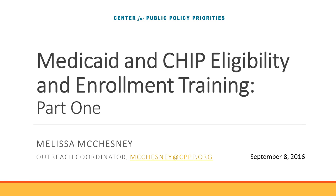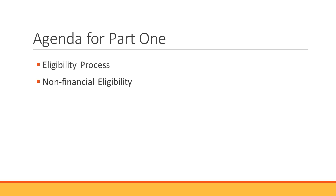I'm going to show you what our agenda for part one is today. Part one of the eligibility and enrollment series will focus on the eligibility process — what happens when you submit an application and how that application process links with the marketplace application. Section two is on what I'm calling non-financial eligibility. We'll discuss briefly the income limits for each of the Medicaid programs, but in general we're talking about the categorical eligibility components of being eligible for Medicaid in Texas.